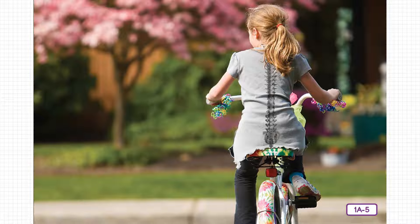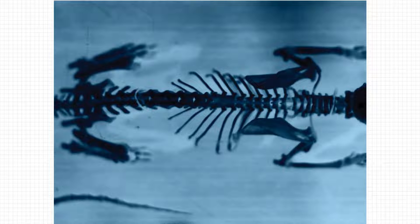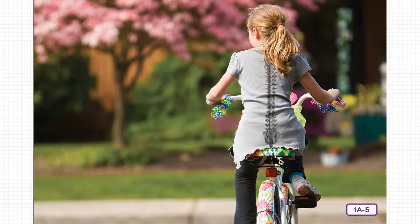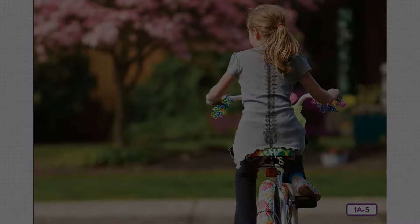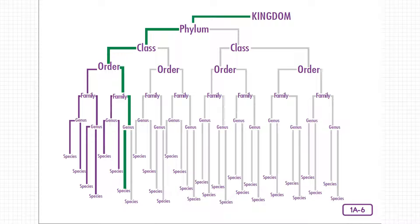My backbone is smaller than yours because I'm much smaller. But if you look closely at this image, you can see how similar the bones are. Vertebrates belong to the animal kingdom and in the phylum chordata. This phylum is divided into even more groups called classes. A class is divided into smaller groups called orders. An order is divided into smaller groups called families. Families are divided into smaller groups, each one a genus. And a genus is divided into even smaller groups called species. There are many, many species within each group.